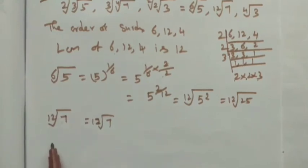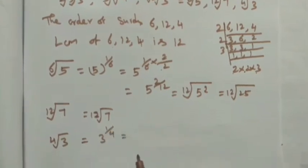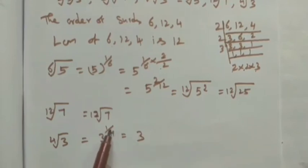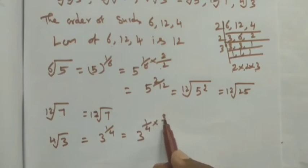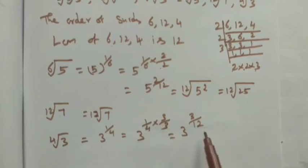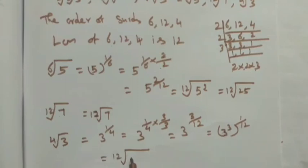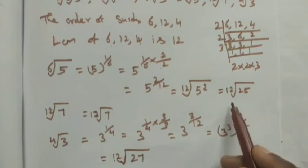The third term is 4th root of 3, meaning 3 to the power 1 by 4. We convert it to 12th root by multiplying and dividing by 3: 1 × 3 = 3 divided by 4 × 3 = 12. This gives 3 to the power 3, whole to the power 1 by 12 — that is 12th root of 3³. Since 3³ = 27, this is 12th root of 27.